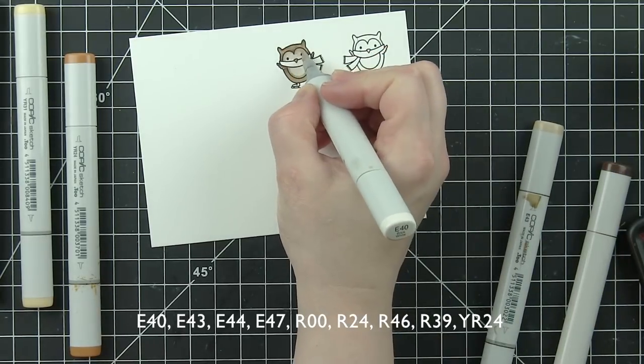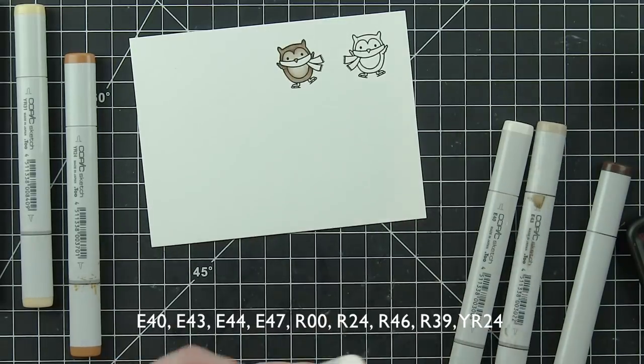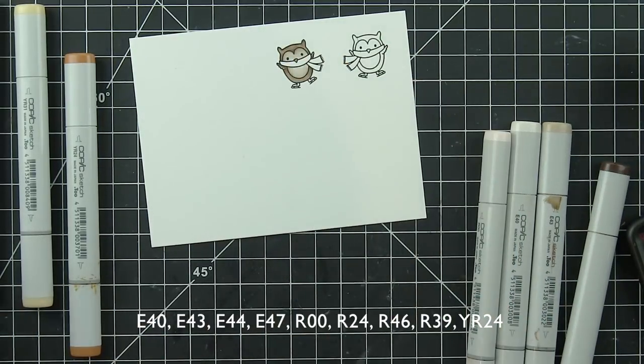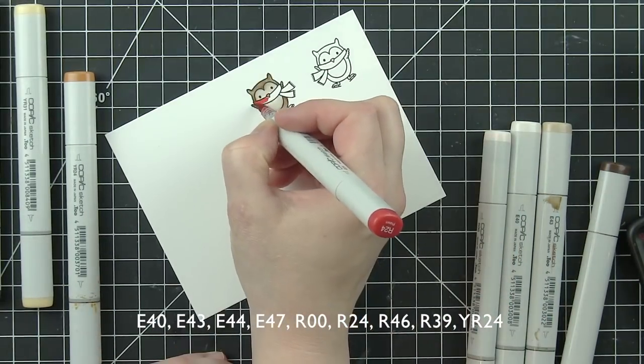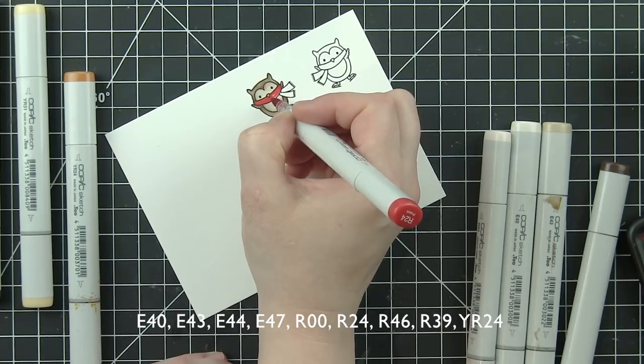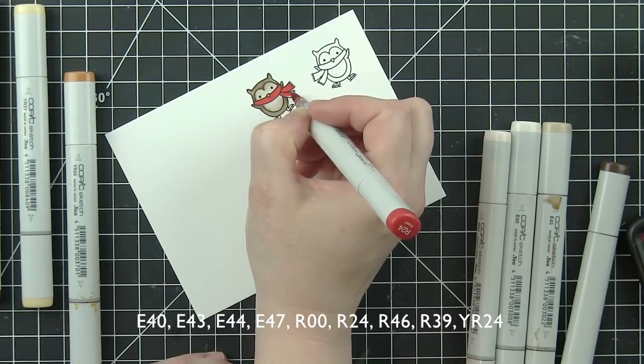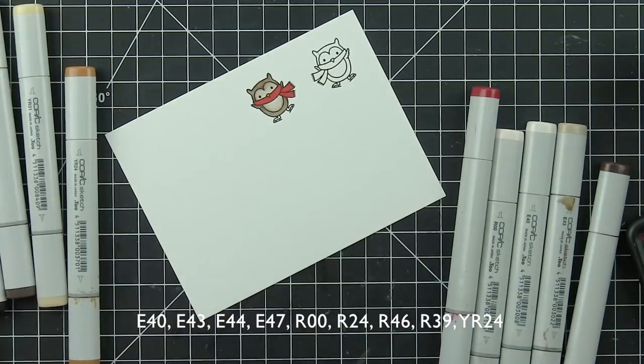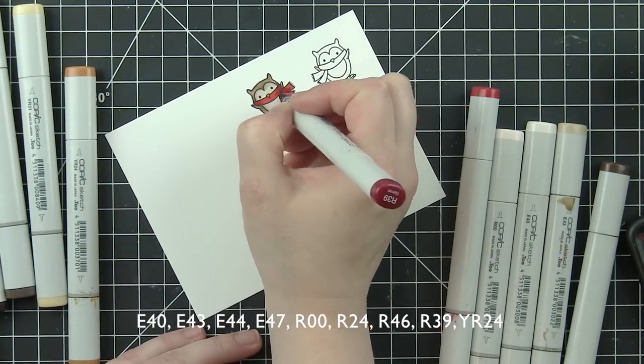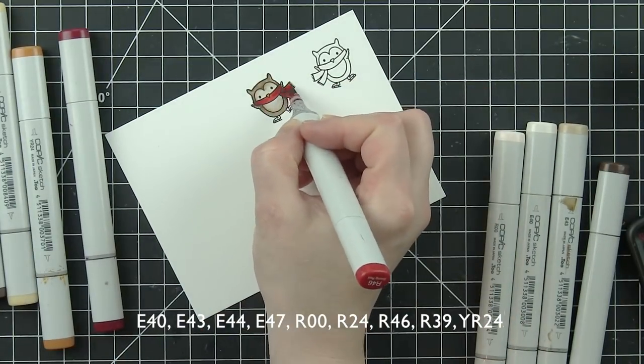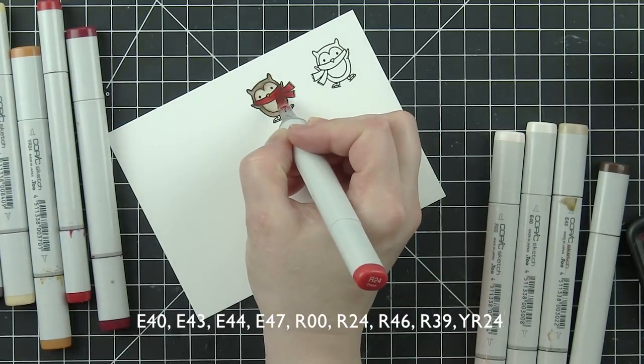E40, E43, E44, and E47 for the owls with YR24 for the beaks and R24, R46, and R39 for the scarves and the ice skates. Pretty simple coloring. Both are going to be colored exactly the same.